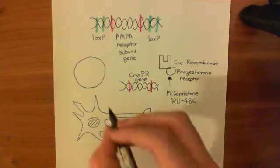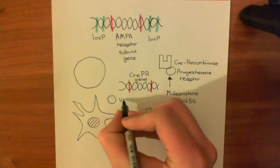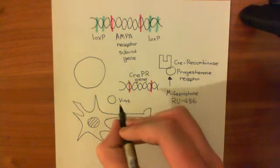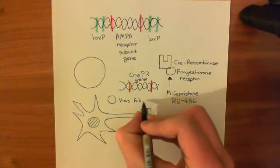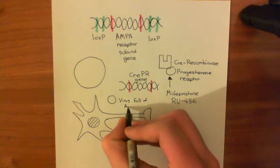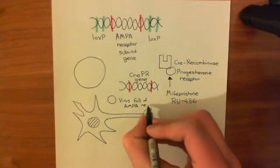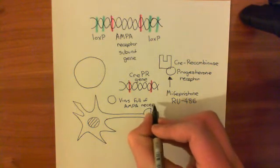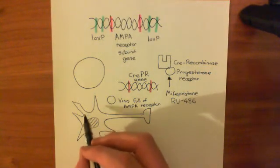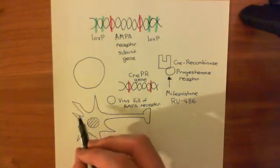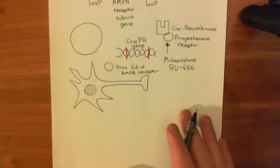What we do next is use viruses. We stuff a virus full of AMPA receptors — it's a package full of AMPA receptors — and we infect the cell with this virus, which dumps the AMPA receptors within the cell.